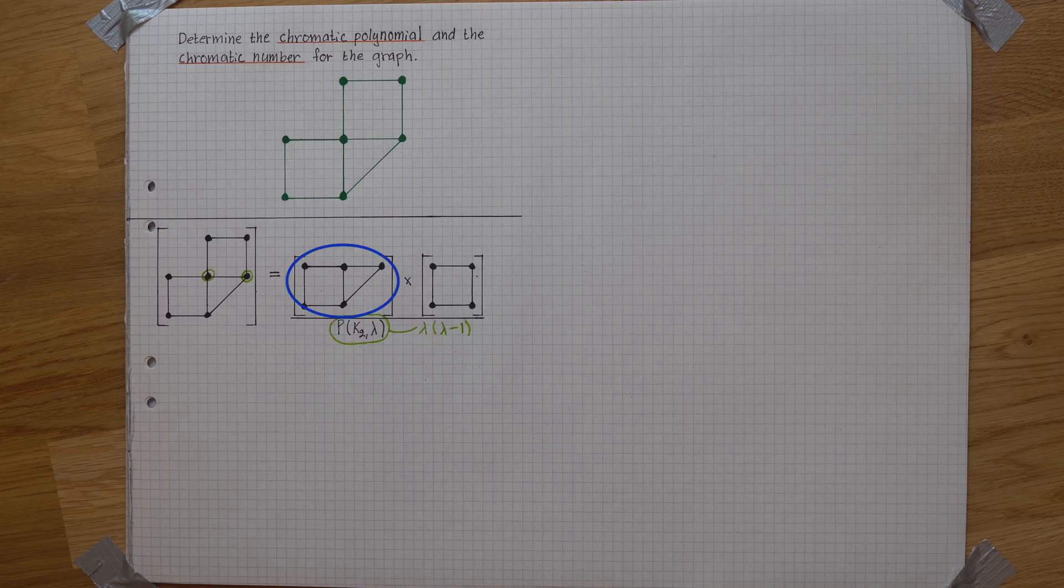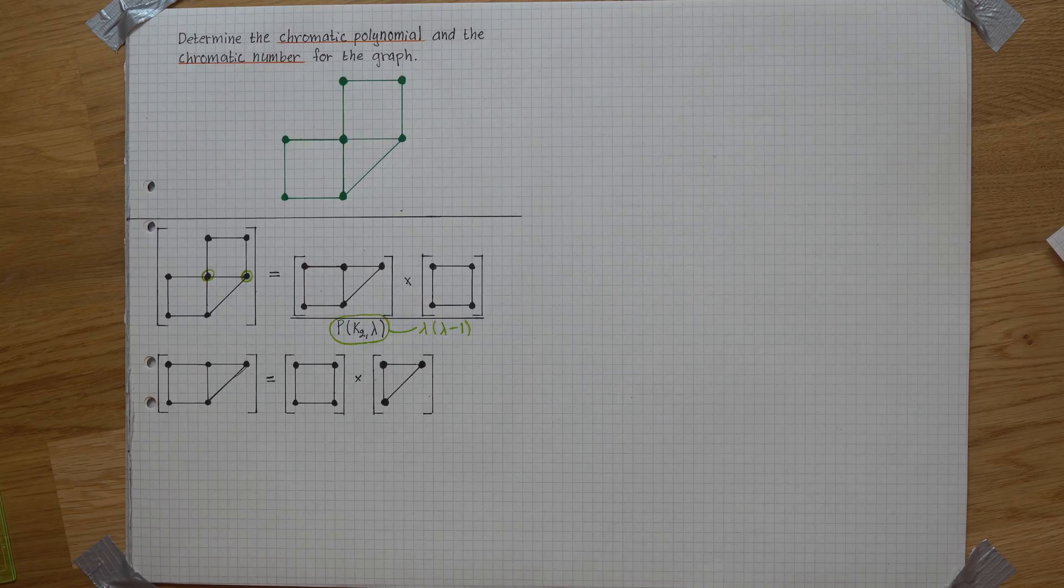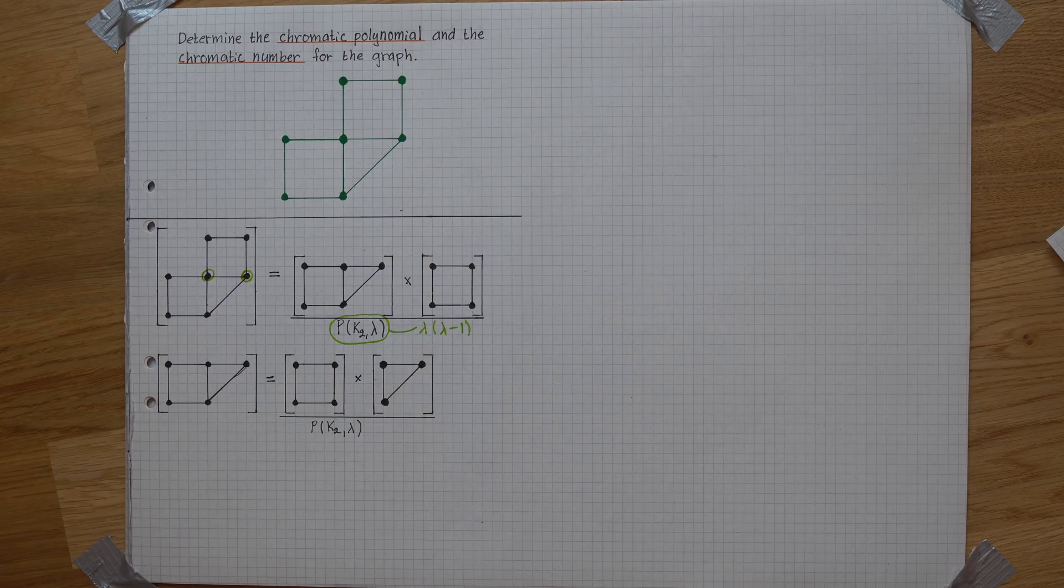Now take this subgraph and divide it into two separate graphs. Since it's separated in two points, it will give us the division P(K2, λ).